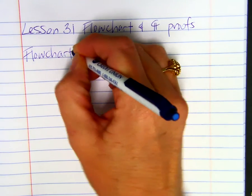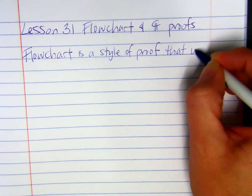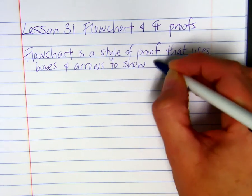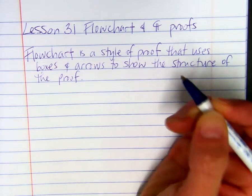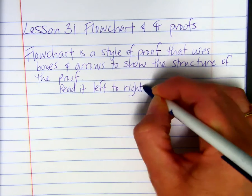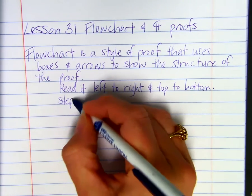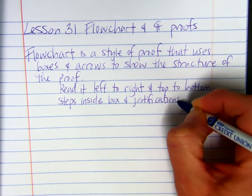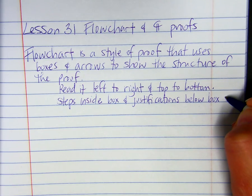So we're just going to write a little definition here. A flowchart is a style of proof that uses boxes and arrows to show the structure of the proof. We read it left to right, top to bottom. The steps go inside the box, and justifications go below the box on the right side.